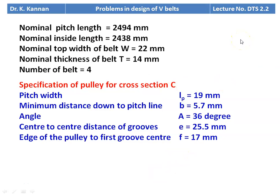Pulley specification for section C: pitch width LP = 19 mm, minimum distance down to pitch line B = 5.7 mm, groove angle 2β = 36 degrees, center-to-center distance of groove E = 25.5 mm, edge of pulley to first groove center F = 17 mm. After calculating all parameters, we write the design details so the examiner understands your knowledge and you get full credit.